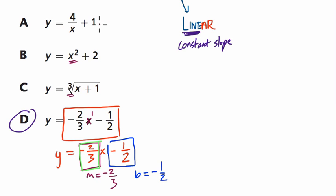If x is in your denominator, this can be written as four times x to the negative one plus one. Because x to the negative one, that literally equals, by the definition, one divided by x.